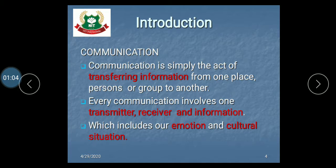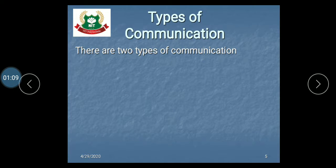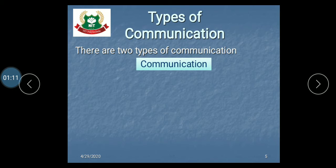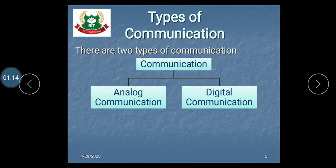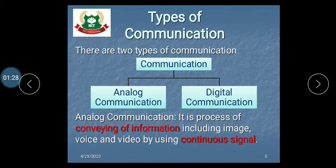Now we discuss about the types of communication system. There are two types: analog communication and digital communication. Analog communication is in the form of analog signal, and digital communication is in the form of discrete communication. Analog communication is the process of conveying information including image, voice, and video using a continuous signal.